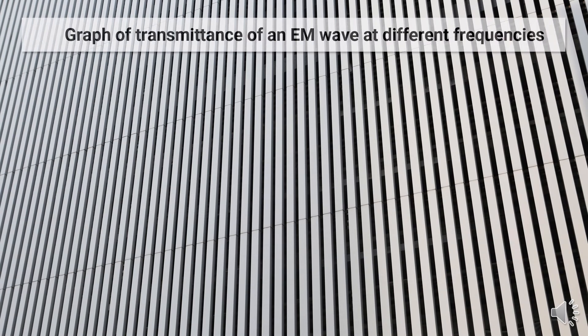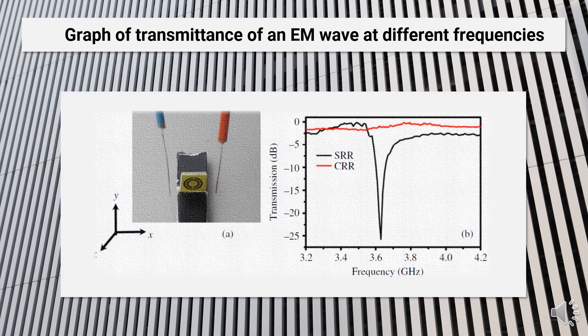So now let's look at the graph of transmission of an electromagnetic wave at different frequencies. This is the experimental setup in which this is the SRR, this is the transmitter and this is the receiver. The graph that was obtained was of this kind. At frequencies around 3.6 gigahertz, there was a sharp dip in the value of transmission.